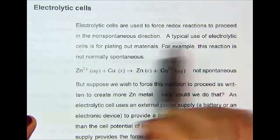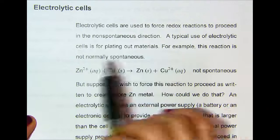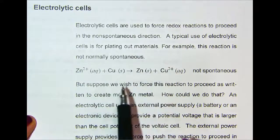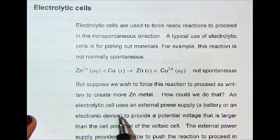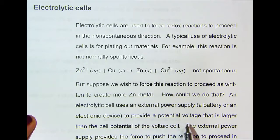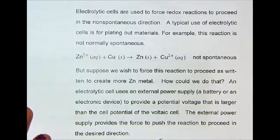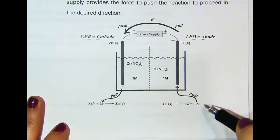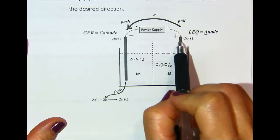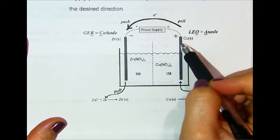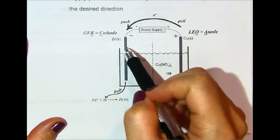A typical use of electrolytic cells is for plating out materials. For example, this reaction is not normally spontaneous, but suppose we wish to force this reaction to proceed as written to create more zinc metal. An electrolytic cell uses an external power supply — a battery or an electronic device — to provide a potential voltage that is larger than the cell potential of the voltaic cell. The external power supply provides the force to push the reaction to proceed in the desired direction. The power supply is designed to pull electrons from the copper electrode and push them toward the zinc electrode. The positive terminal of the power supply would be connected to the copper electrode, and the negative terminal would be connected to the zinc electrode.